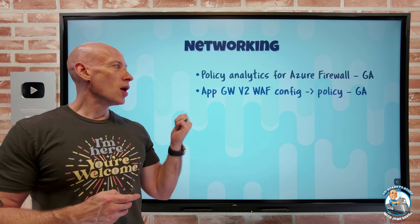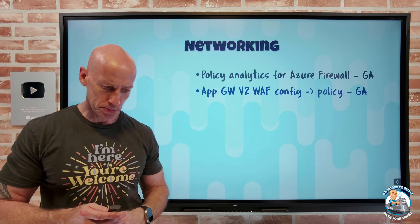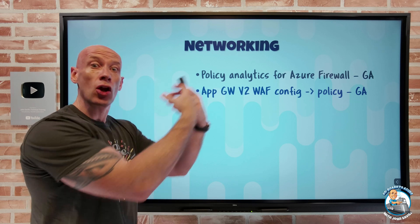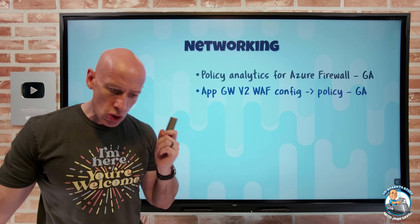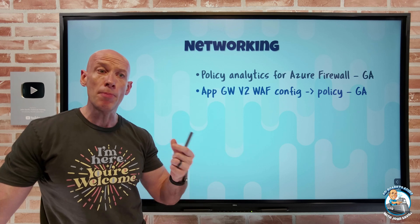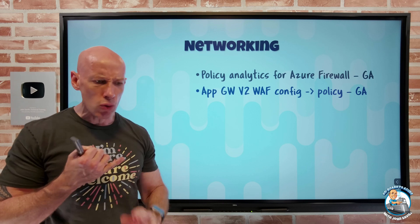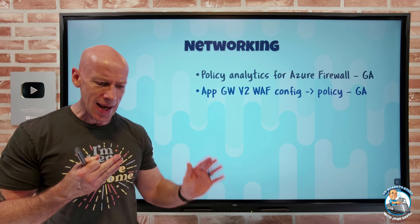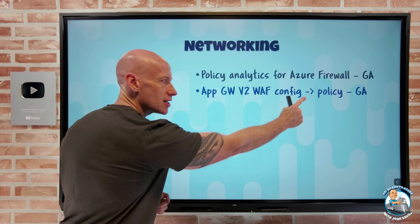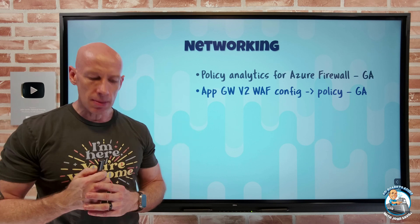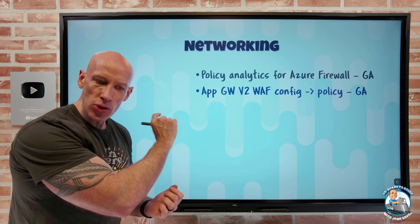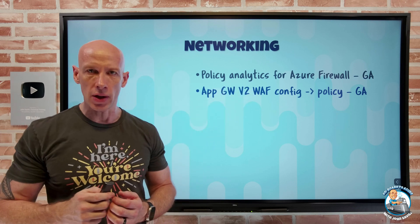Azure App Gateway V2 Web Application Firewall config to policy migration. The regional web application firewall — the one I attach to an Azure App Gateway instead of the global WAF on Front Door — now has a seamless migration experience to move from configuration to policy. Policy is the newer state. Policy has support for newer managed rule sets, custom rules, per-rule exclusions, bot protection rules, higher scale, and I can use it across multiple gateways, listeners, and URL paths — it has all the latest features. So to get from configuration to policy, it's now a simple upgrade. I need to be running App Gateway WAF V2, and if I am, I can see an option to upgrade from WAF configuration and it will move it to policy. Highly recommended.